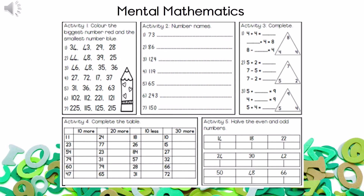Activity two: you have to write the number names. So they give you the number and you go and write it in words. Activity three is number families. They give you the number family in the triangle and you have to use that to complete the sums.